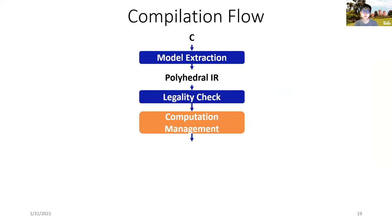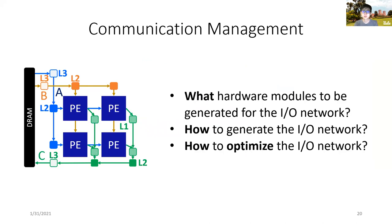The next step is communication management. This step constructs and optimizes the I/O network. Specifically, in this step, we aim to answer the following questions. First, what hardware modules should be generated for the I/O network? Second, under the scope of polyhedral framework, how do we generate these modules? Lastly, to achieve the best performance, what other optimizations should we apply to the I/O network?